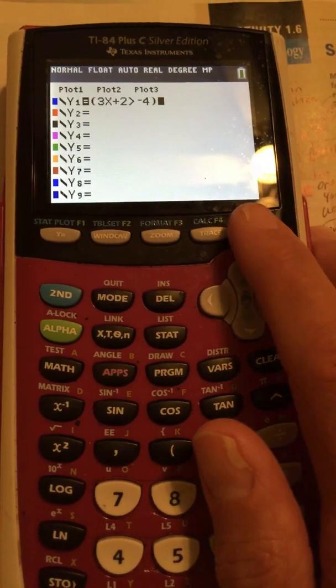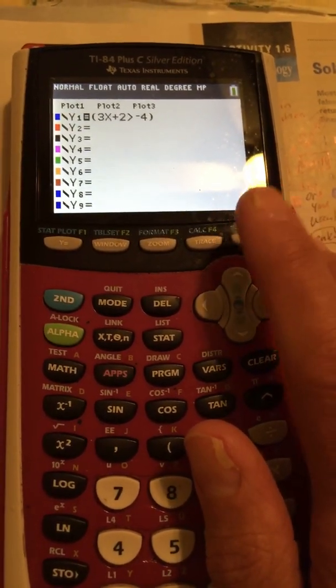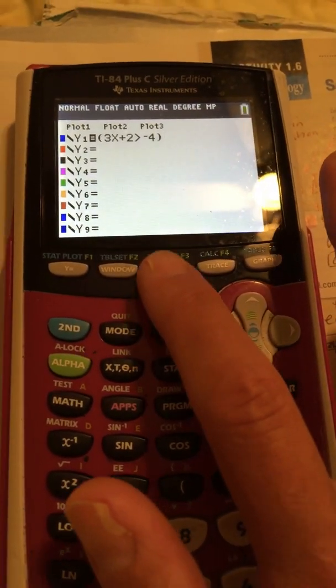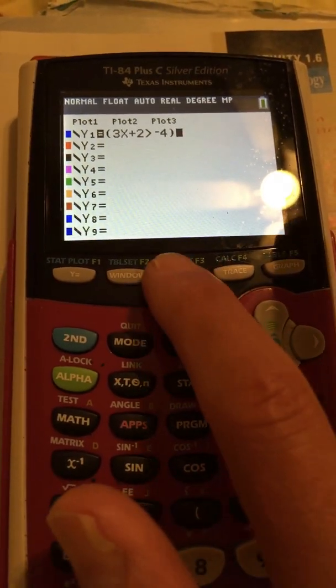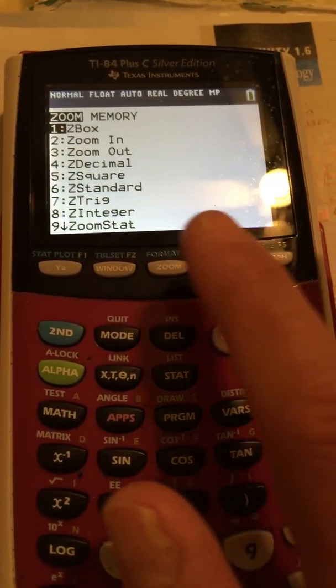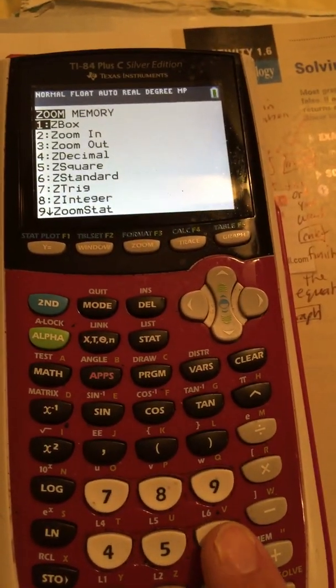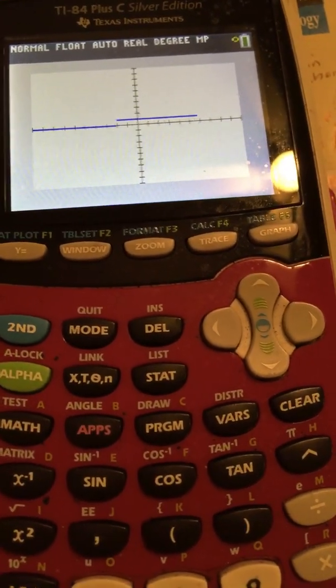Now, when I did this earlier, I had a bad window. So you can hit graph. And if your window is good, that's fine. The easiest way to fix your window is this button that says zoom, which makes me want to sing this song from the 70s. It goes, zoom, zoom, zoom, zoom, zoom. And if you go to standard 6, then that's usually a pretty good window. You can always start there and then mess with it.